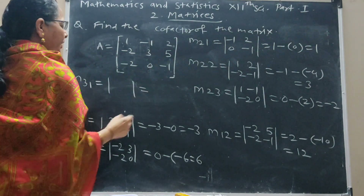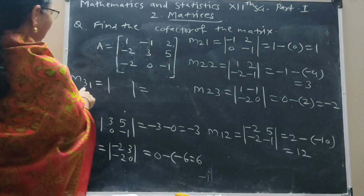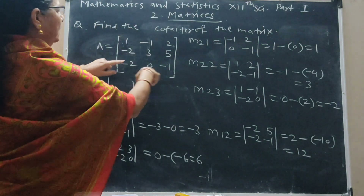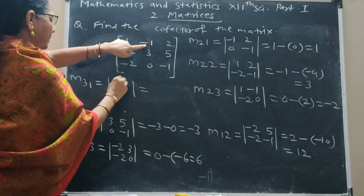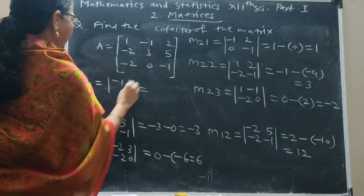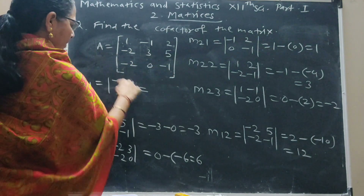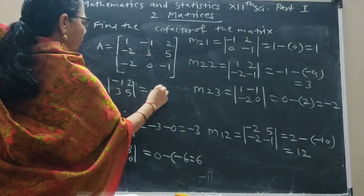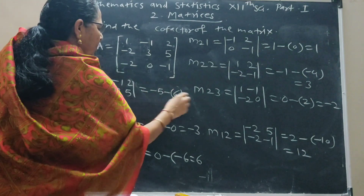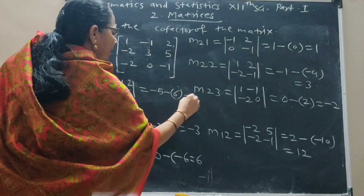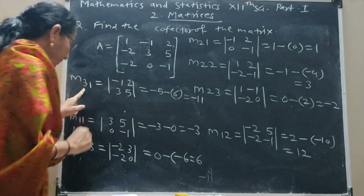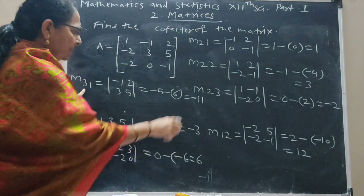M31: delete the third row and first column. Remaining elements are minus 1, 2; 3, 5. This gives minus 5 minus 6, which equals minus 11. So M31 = minus 11.